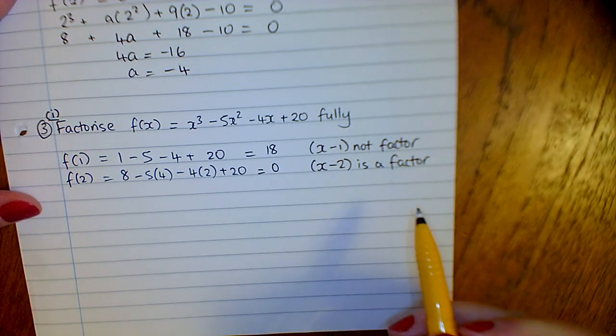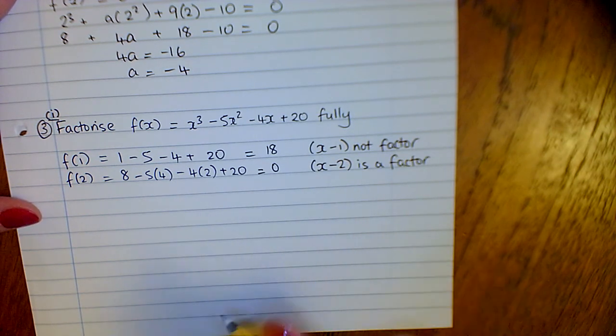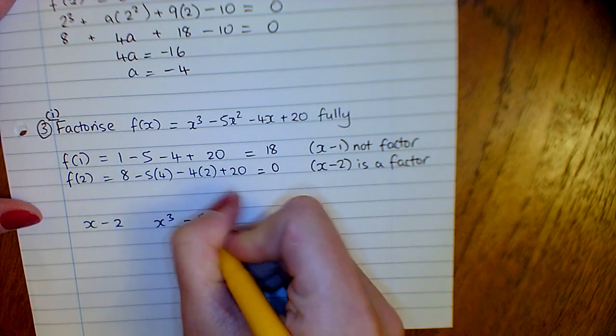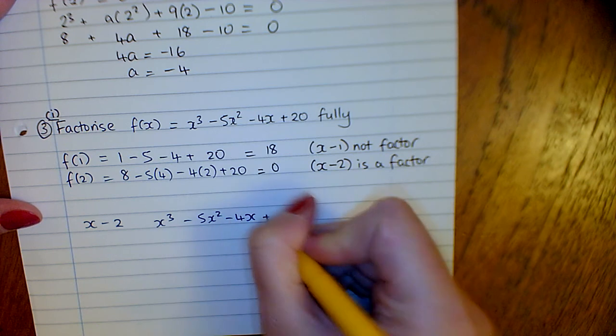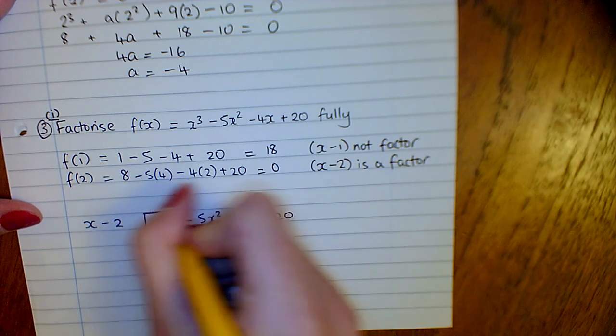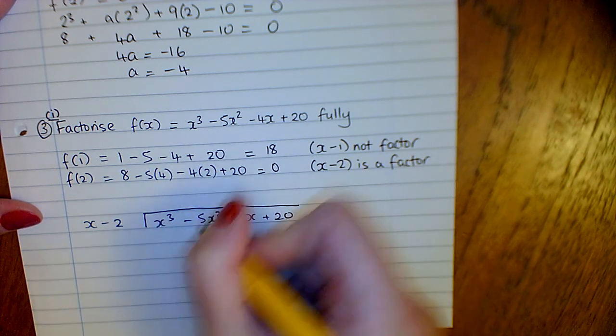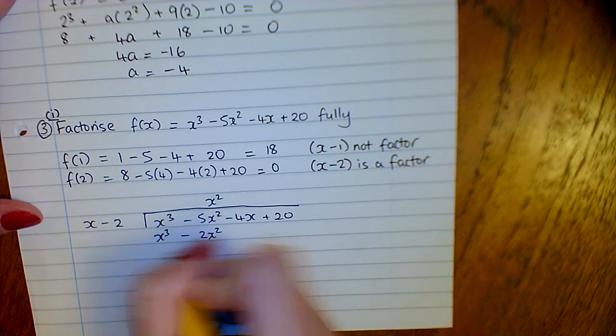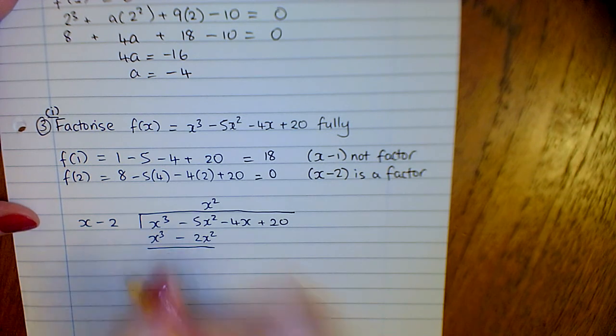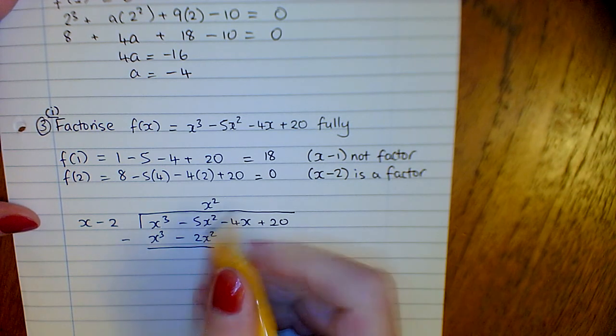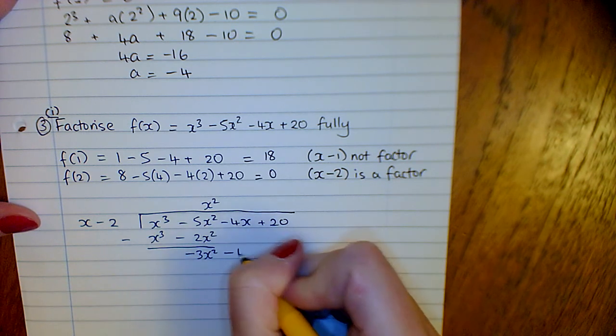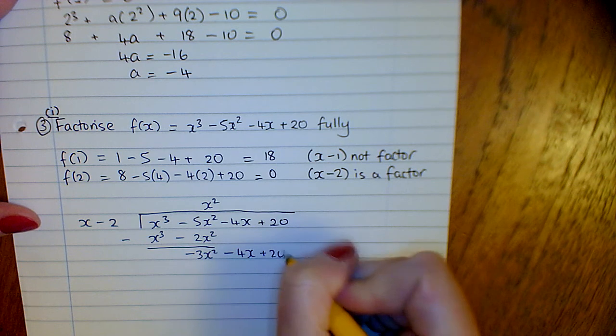Okay, now we know that this is a factor, we'll use long division to find the quadratic. So x minus 2 into x cubed minus 5x squared minus 4x plus 20. X times x squared would give us x cubed. Take it away. This disappears, so minus 5 minus minus 2, which gives you minus 3, and bring everything else down.